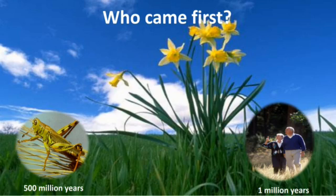Who came first — the insect or the human being? Well, insects evolved 500 million years ago and human beings evolved just 1 million years ago. So insects are well equipped and adapted to all environmental conditions.